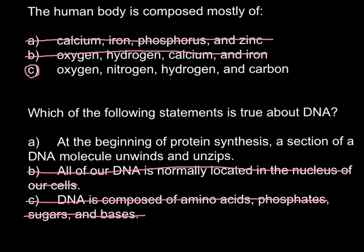Answer A: At the beginning of protein synthesis, a section of the DNA molecule unwinds and unzips. This is really so because the first stage before we start to produce a protein is to make a messenger RNA that would code for the protein sequence. Messenger RNA production begins with a section of the DNA molecule unwinding and unzipping. So this is the correct answer. I hope you were able to answer all these questions correctly. Thank you for your attention. Please subscribe to my new videos. Goodbye.